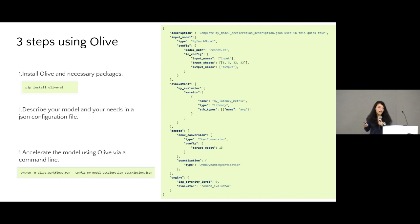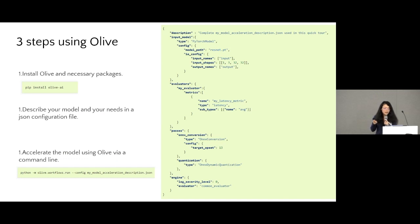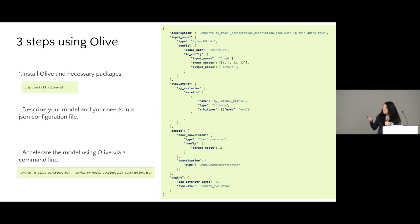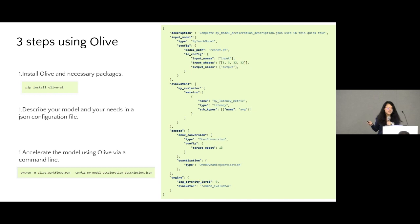You can unlock the power of Olive and get the best performance with these steps. First, developers install Olive and its dependencies. Then they prepare the Olive configuration file, specifying the deployment requirements. Once the configuration file is ready, developers can initiate the optimization process with a simple command line. The configuration file on the right includes your model information, the dataset you want to use for evaluation, and the metrics you care about during evaluation, as well as the optimization techniques you want to apply.